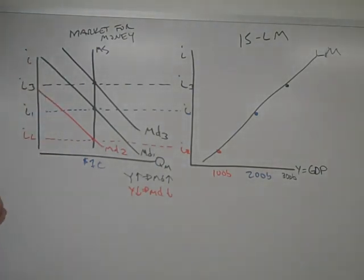So last module, we learned that IS is downward sloped and LM is positively sloped.